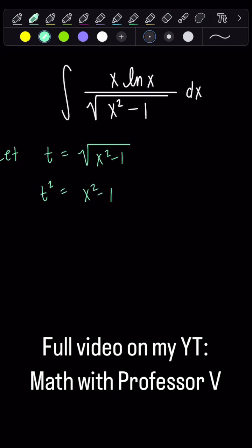So t squared equals x squared minus 1. Now differentiating both sides, we have 2t dt equals 2x dx. So those twos cancel out, so t dt is basically x dx,